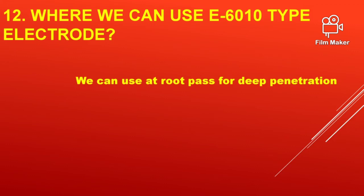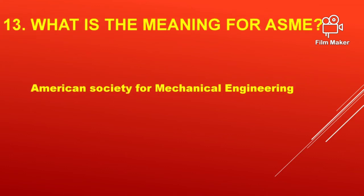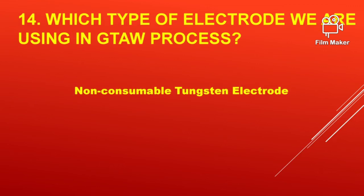We can use it at the root pass for deep penetration. What is the meaning of ASME? American Society for Mechanical Engineering. Which type of electrode are we using in the GTAW process? Non-consumable tungsten electrode.